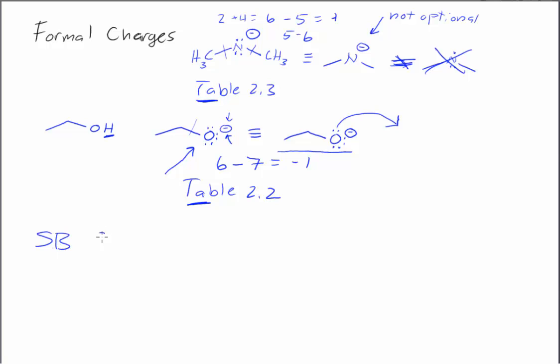So skill builder 2.5 asks us to identify lone pairs on certain nitrogens. So let's look at a couple of different nitrogen examples that have different electron counts around the N. So here we're giving you the formal charge, and then we're asking you to fill in lone pairs.